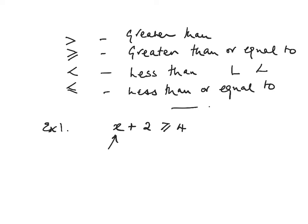I want to get rid of the plus 2 so I'm going to subtract 2 from both sides. And x is greater than or equal to—you'll notice the inequation sign doesn't change—4 minus 2 is 2.